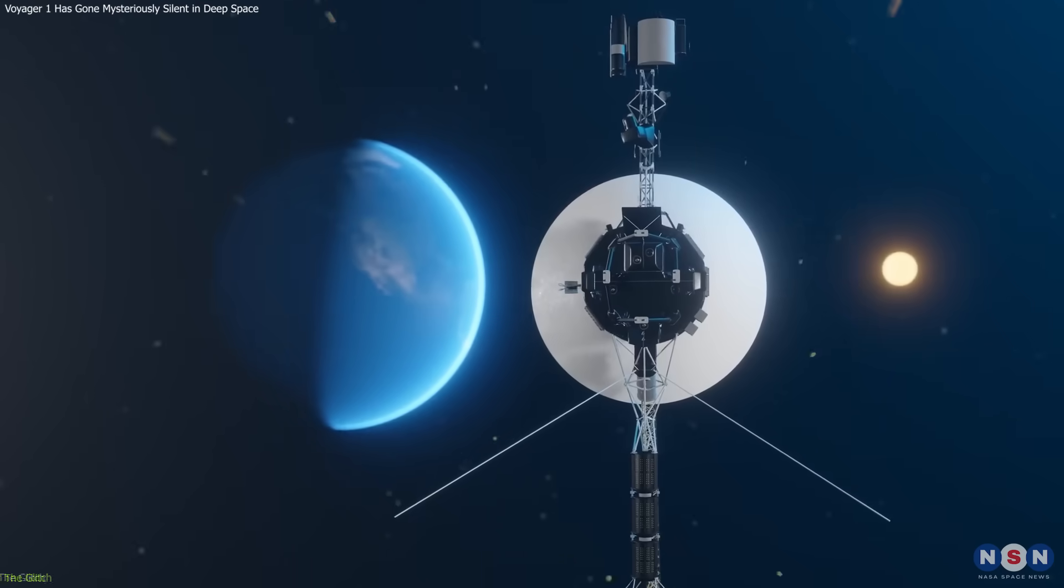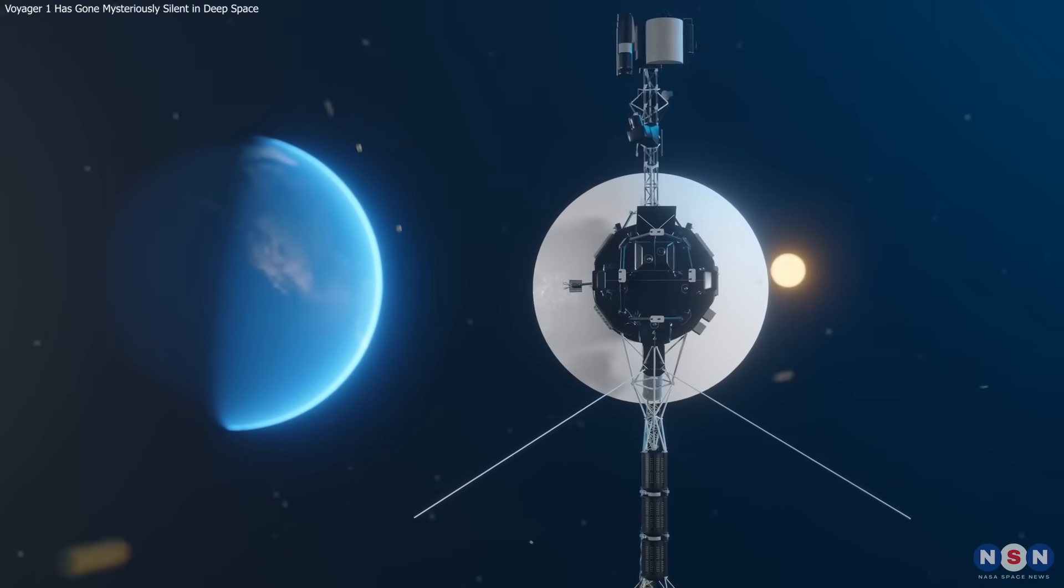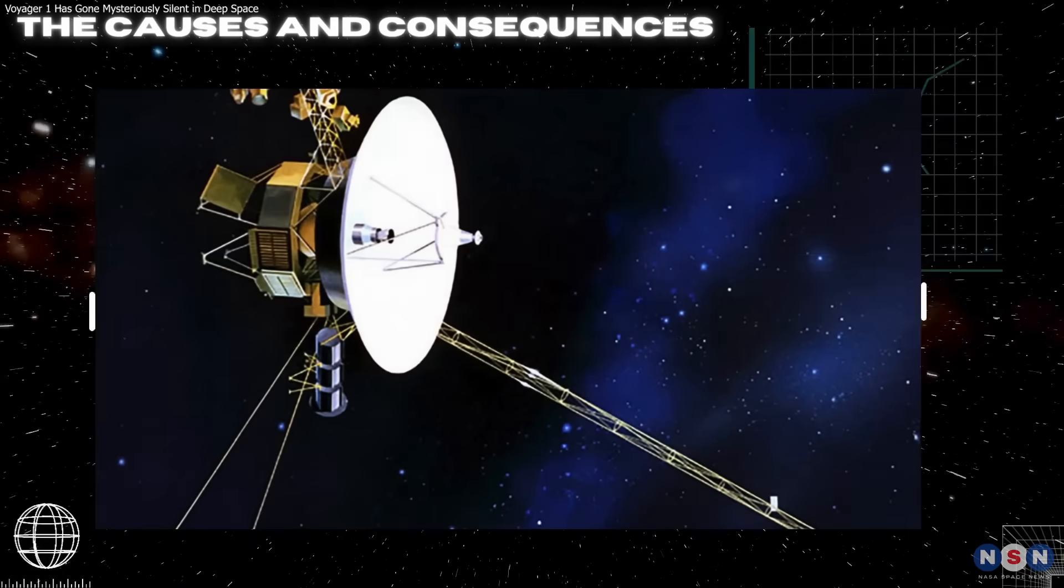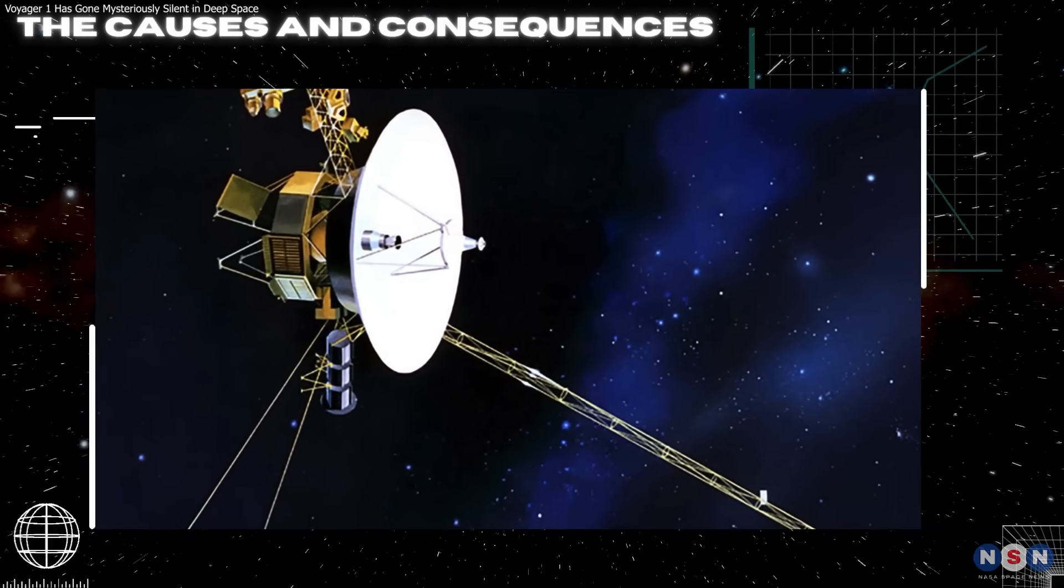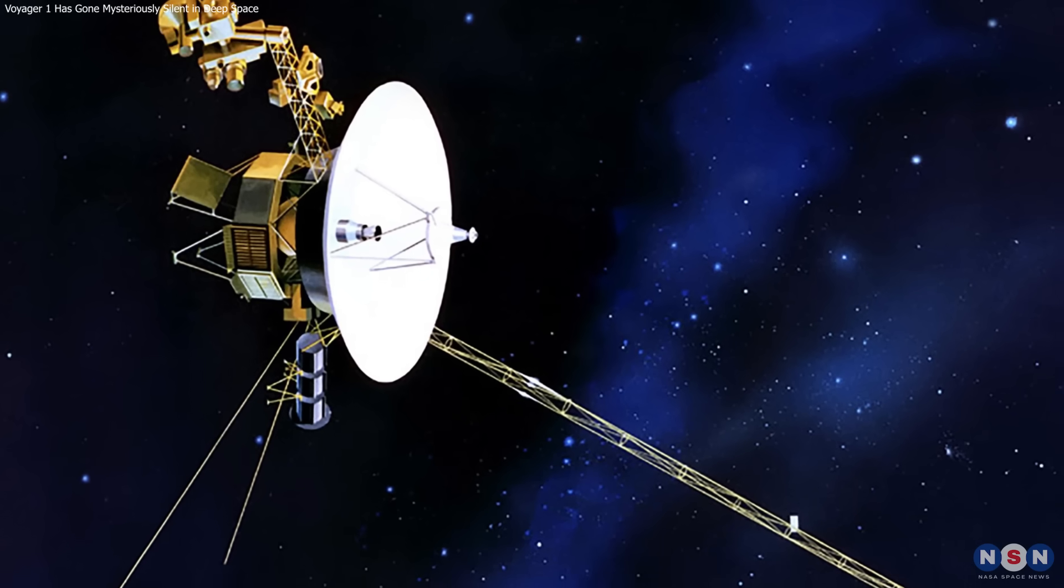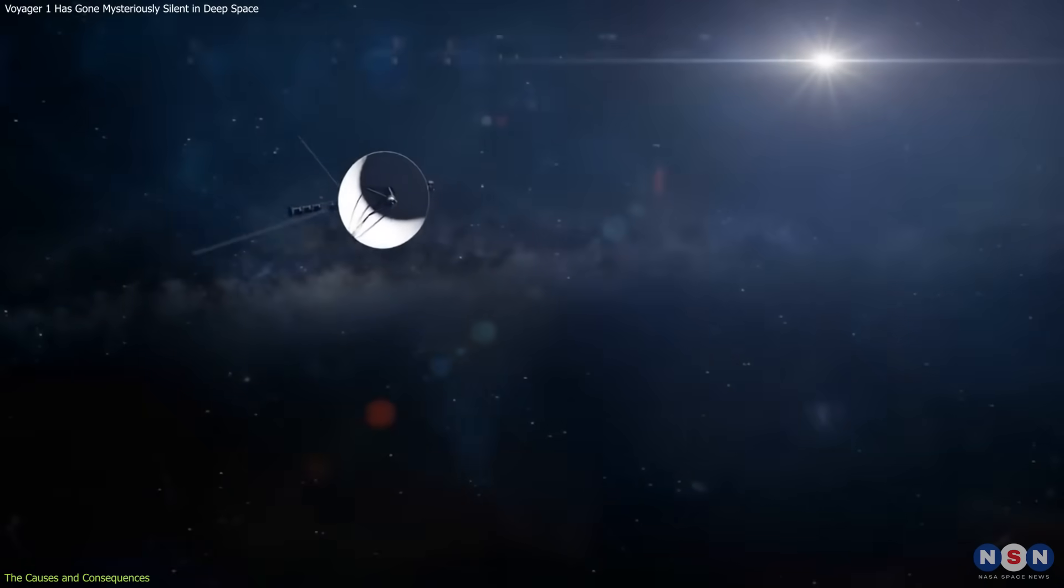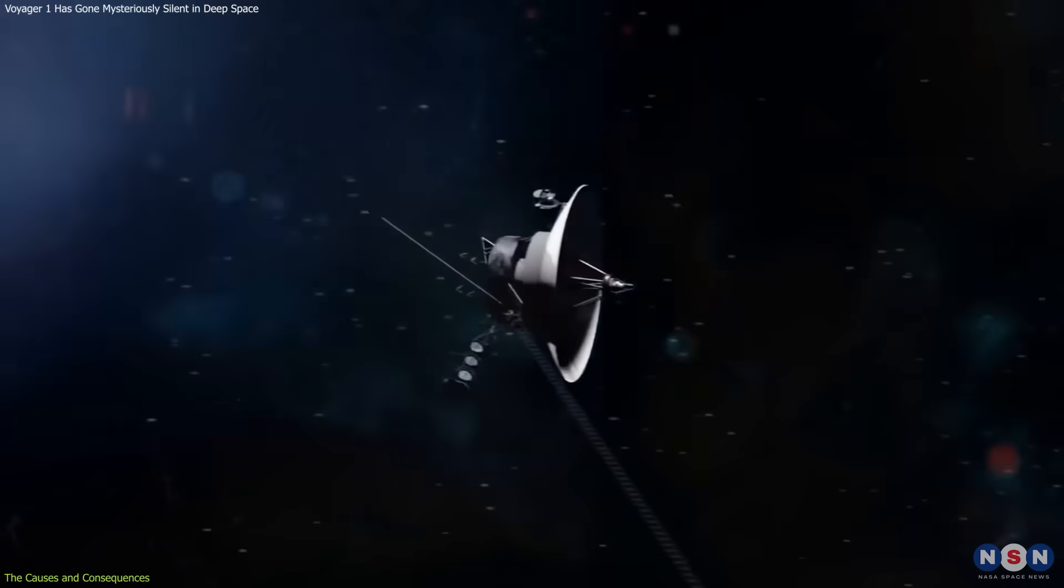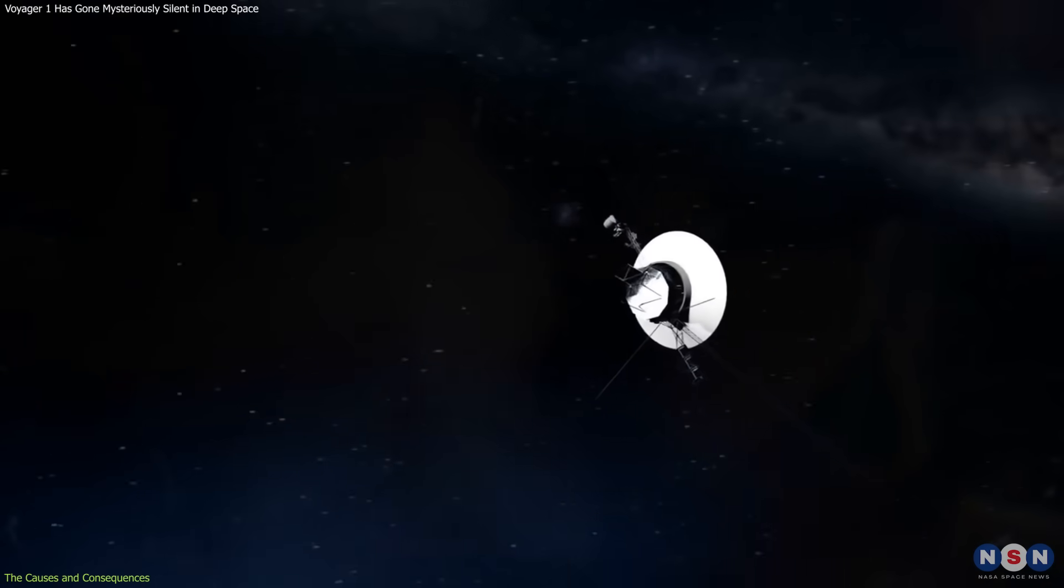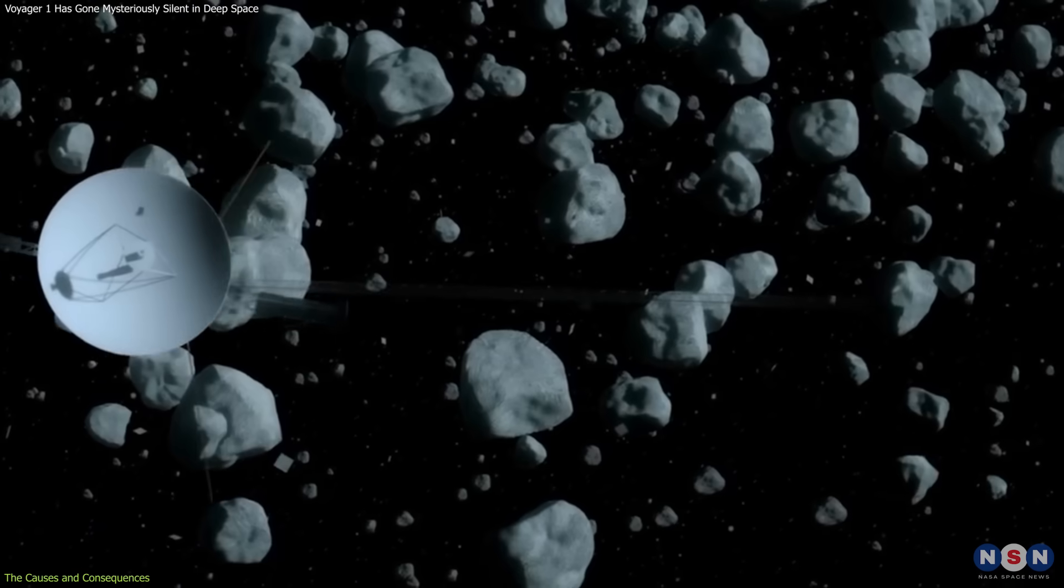So how did this glitch happen, and what can we do about it? There are several possible causes and consequences of the glitch, and they are all related to the age, environment, or software of Voyager 1. Let's look at each of them in turn.